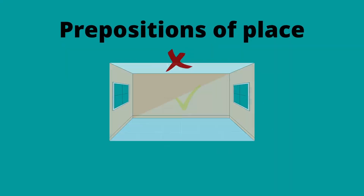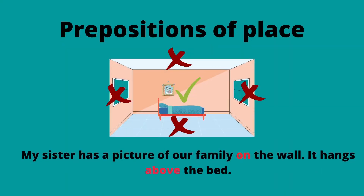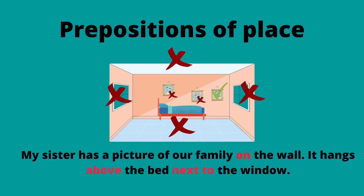'On' defines the location on one of the walls. Now you could use the preposition 'above' to say the picture hangs above her bed — then everybody knows the picture hangs on the wall above her bed. However, if there are several pictures on that wall and you want to specify the location further, you could use the preposition 'next to'.